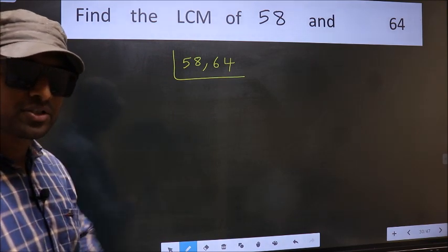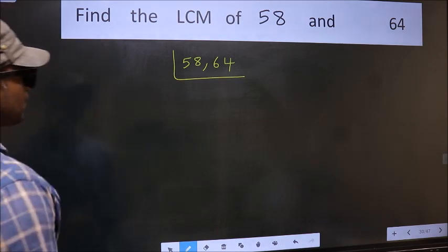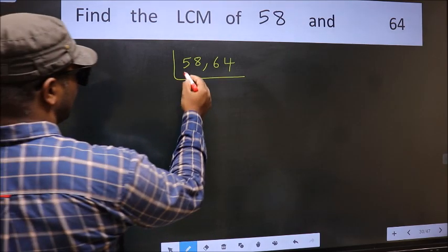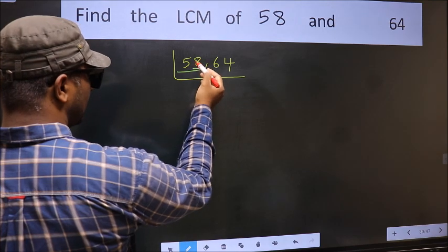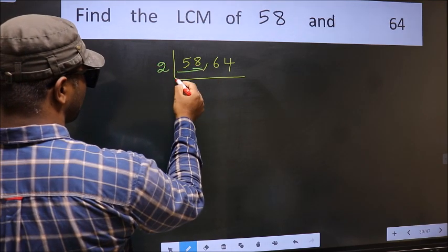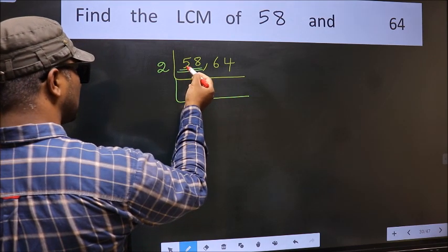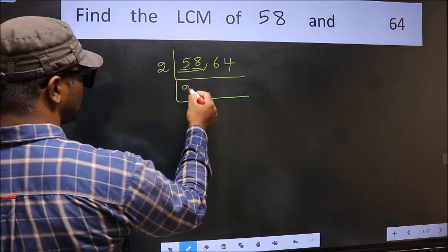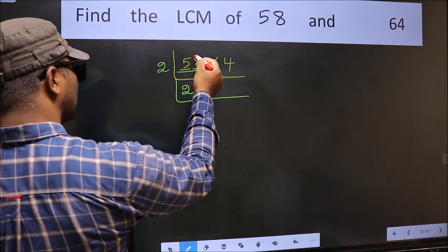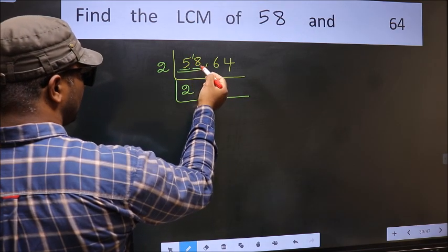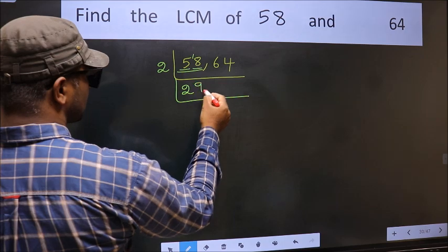Now focus on the first number, which is 58. The last digit is 8, so take 2. First number is 5; a number close to 5 in the 2 table is 2 times 2 is 4. 5 minus 4 is 1, carried forward gives 18. When do we get 18 in the 2 table? 2 times 9 is 18.